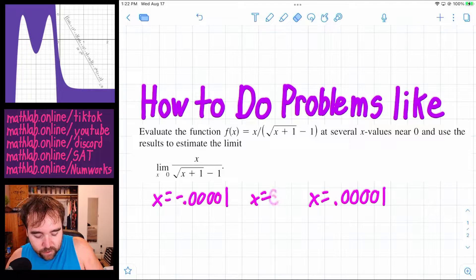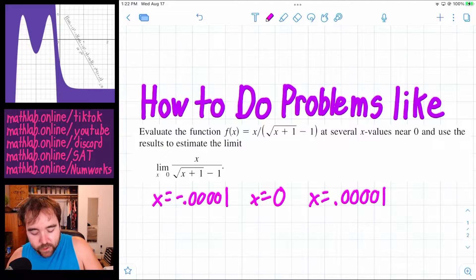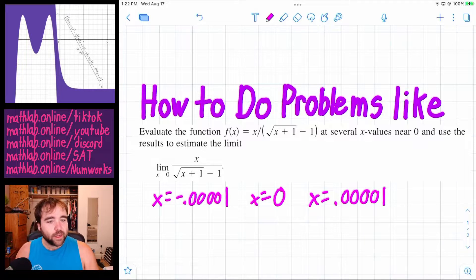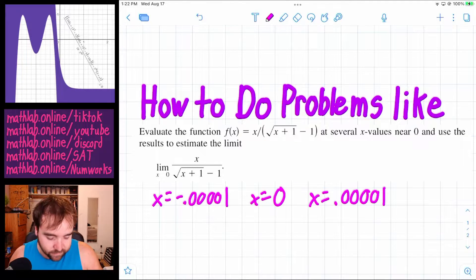Well, first off, what happens if you plug in x equals 0? You get 0 over 0. You just get undefined. So that's why we can't just plug in x equals 0, because that's always the first idea.